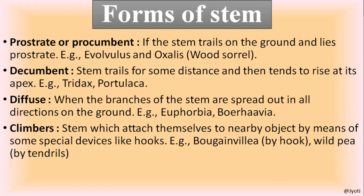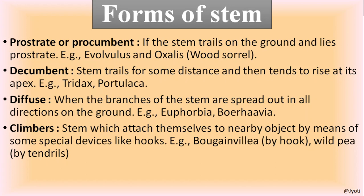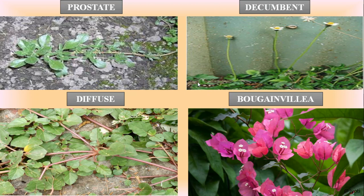Next are prostrate or procumbent stems, where the stem trails on the ground and lies prostrate — it grows horizontally like a creeper. Then there is the decumbent stem, where the stem trails for some distance and then tends to rise at its apex, as in tridax. The stem is prostrate up to a certain distance and after that it rises, bearing leaves and flowers. Such a stem is called decumbent.